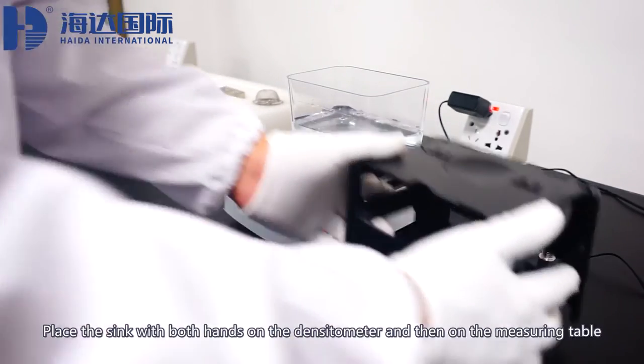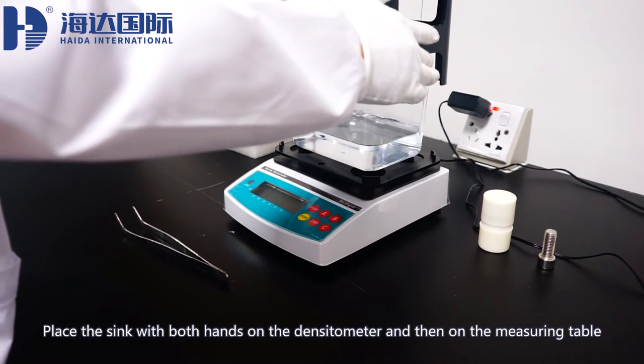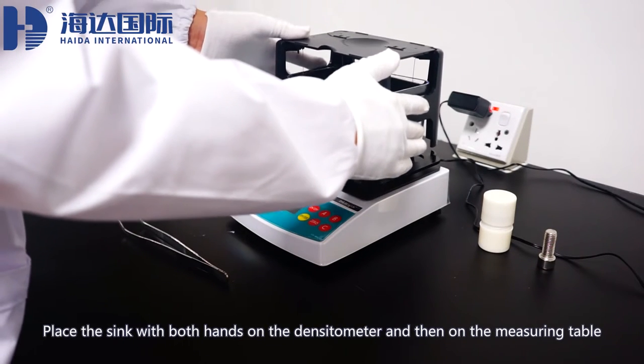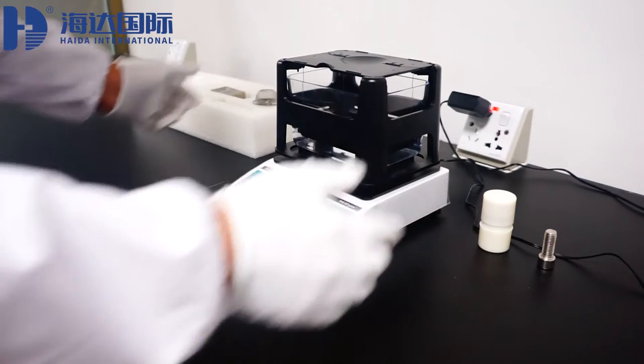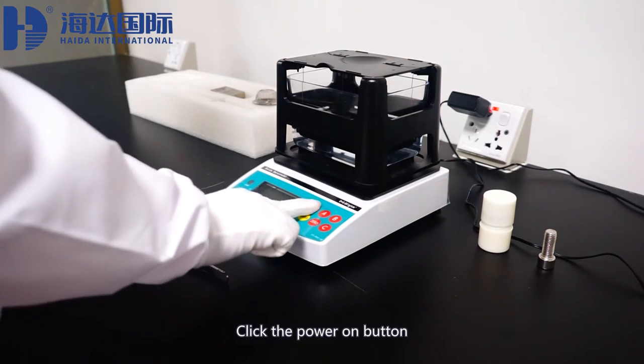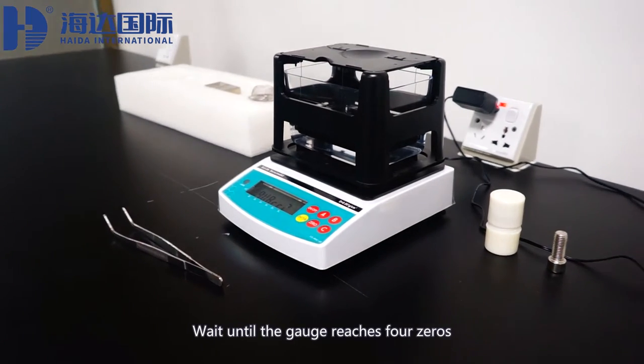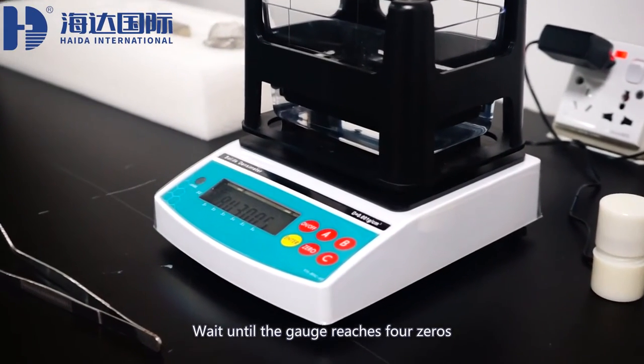Place the sink with both hands on the densitometer and then on the measuring table. Click the power on button. Wait until the gauge reaches zero.